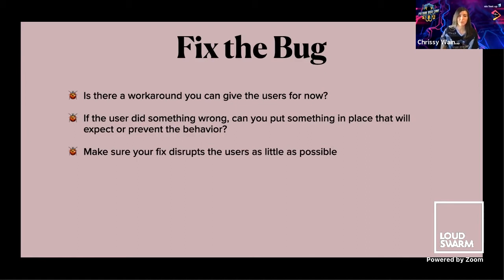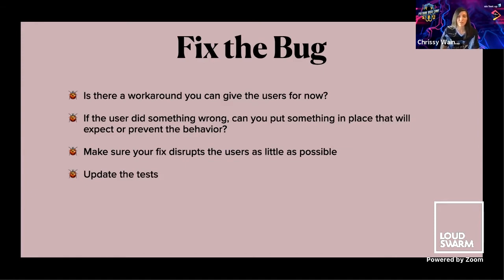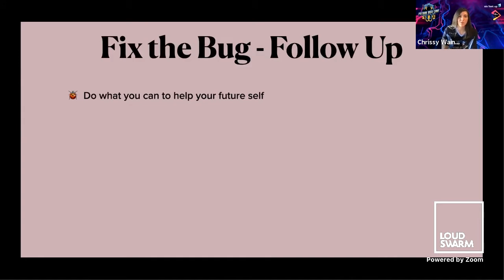Make sure that whatever fix you put in place disrupts users as little as possible — do whatever you can in the code to help them. When you fix the bug, make sure you update the tests. This will help ensure this bug doesn't happen as a regression in the future and will ensure complete code coverage. After you've fixed the bug, there's some follow-up that should go along with that. Do what you can to help your future self.